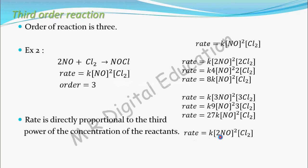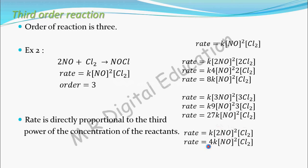Now I will increase the concentration of NO two times, but keep the concentration of Cl₂ as it is. Taking this 2 outside gives 2² = 4. So rate = 4 × K × [NO]² × [Cl₂]. The rate is increasing four times only, because I am keeping the concentration of Cl₂ constant. The rate will not increase with respect to that reactant — it increases only with respect to NO. So the rate is increased four times.